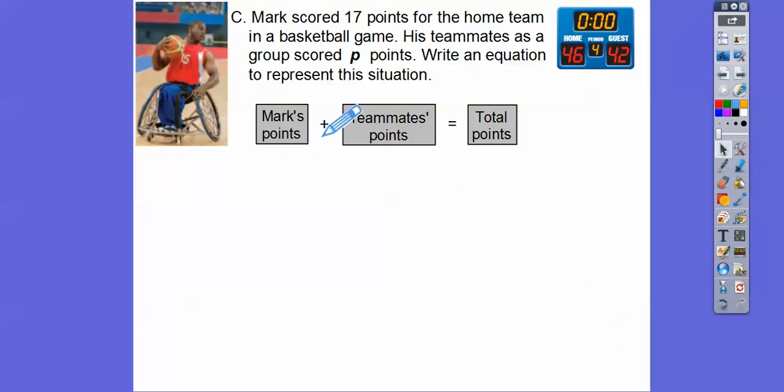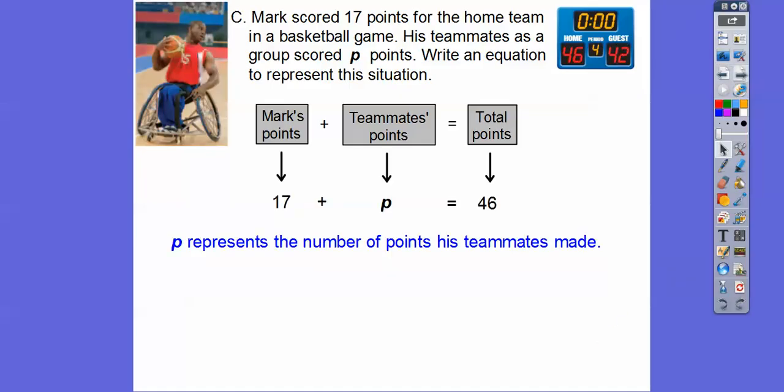So we have Mark's score plus the teammate's score equals the total score. So Mark's score is 17, so this will be 17, plus we're going to say p for his teammate's score. So 17 plus p equals the total points. So he was on the home team, so it's going to equal that 46 right there. So when we plug that in, there's our equation right there. So p represents the number of points that his teammates made.